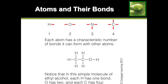Before getting into the details, you need to be familiar with the bonds that each atom has. Each atom has a unique number of bonds that it will always retain. Hydrogen can only ever have one bond. Oxygen always has to have two bonds. Nitrogen always has three bonds, and carbon always has four.